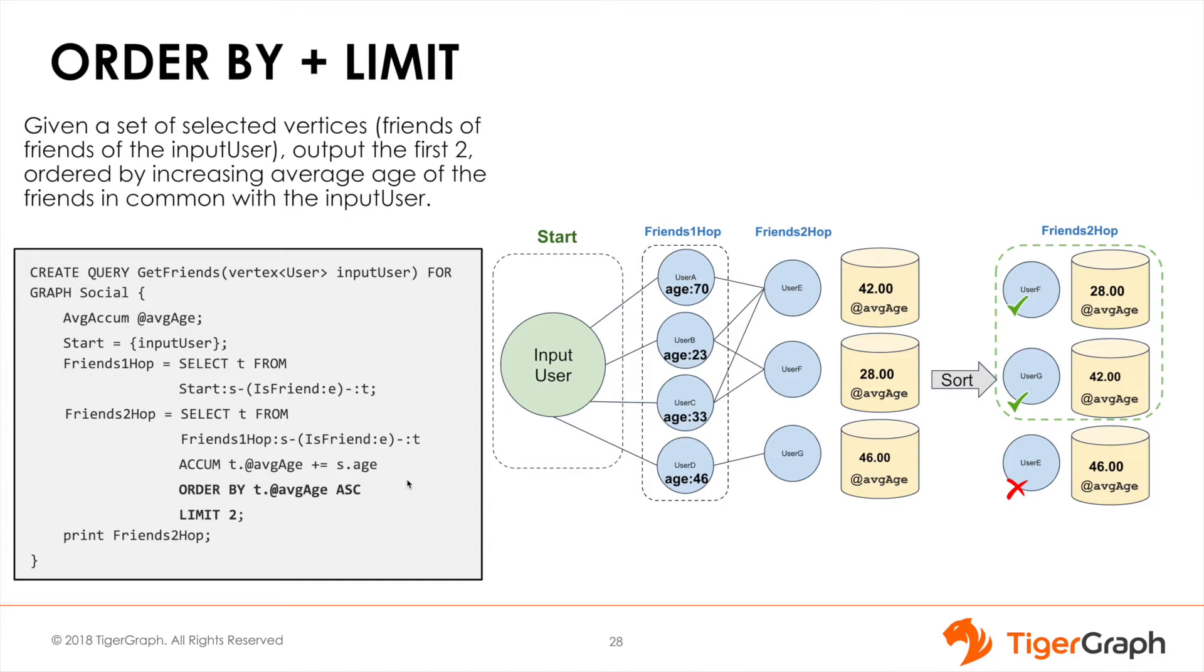After accumulating the ages to the average accumulator, we order them by ascending age and limit the results to only two, giving us the smallest two average accumulator values.